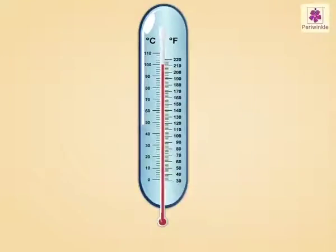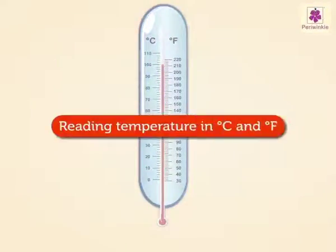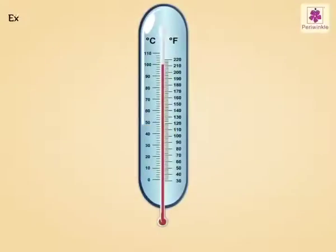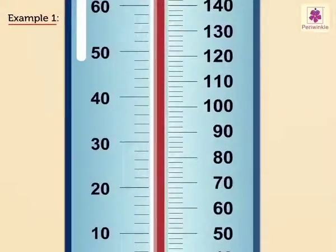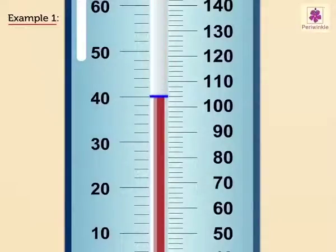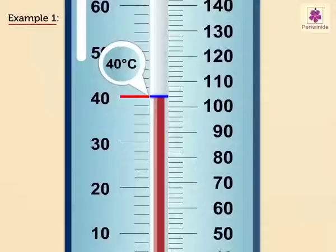Now, let us read the temperature in degree Celsius and degree Fahrenheit. Example 1: here, the mercury level is at 40 degree Celsius or 104 degree Fahrenheit.